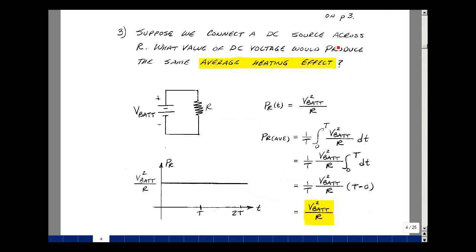Suppose we connect a DC voltage source across a resistor. What value of DC voltage would produce the same average heating effects as our AC source? So here's a battery. Put the same resistor across it. The power is, again, going to be voltage squared over the resistance. It's going to be v battery squared over r. Could sketch that versus time, just a constant. Call anything a period and twice the period. You can see the average value is going to be equal to v bat squared over r.